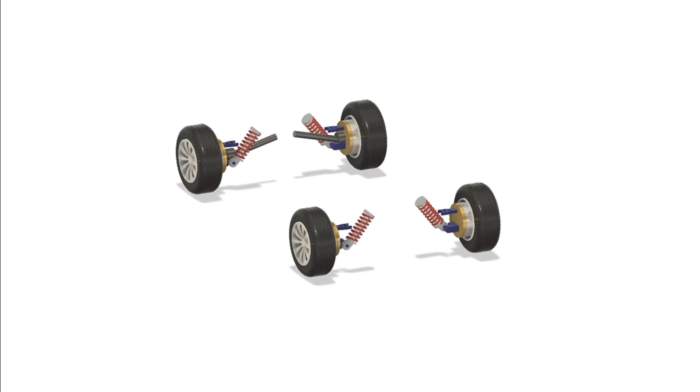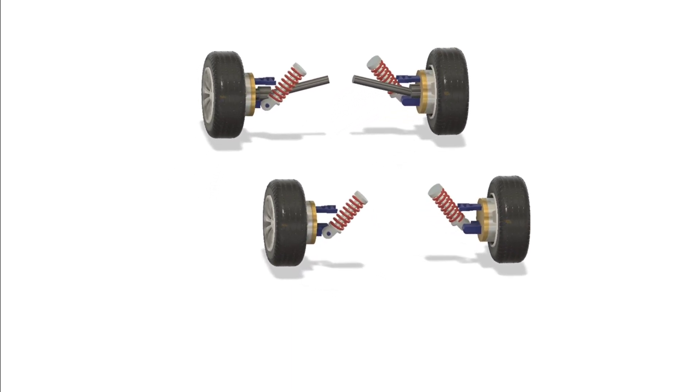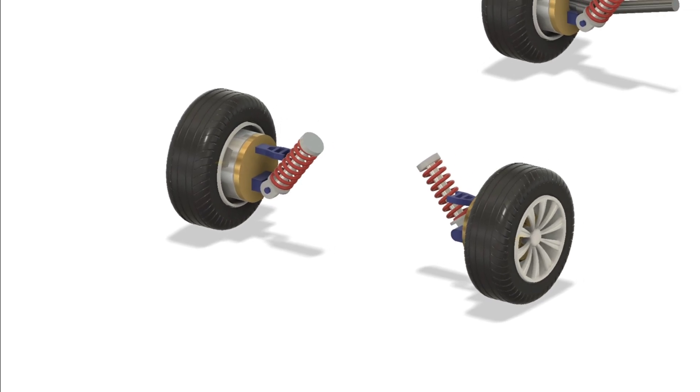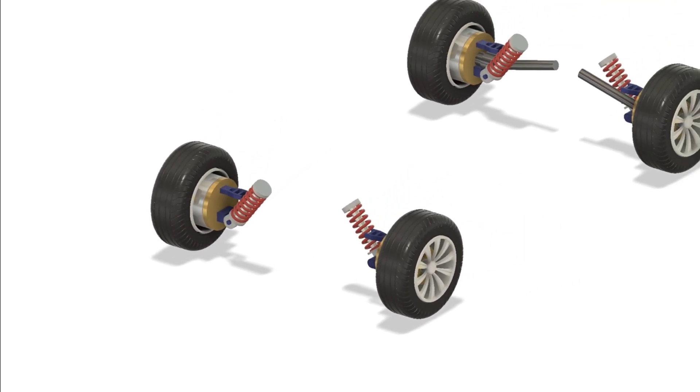In-wheel motors pave the way for truly smart vehicles, capable of advanced features like autonomous parking, crab walking or precision torque control without complicated mechanics.